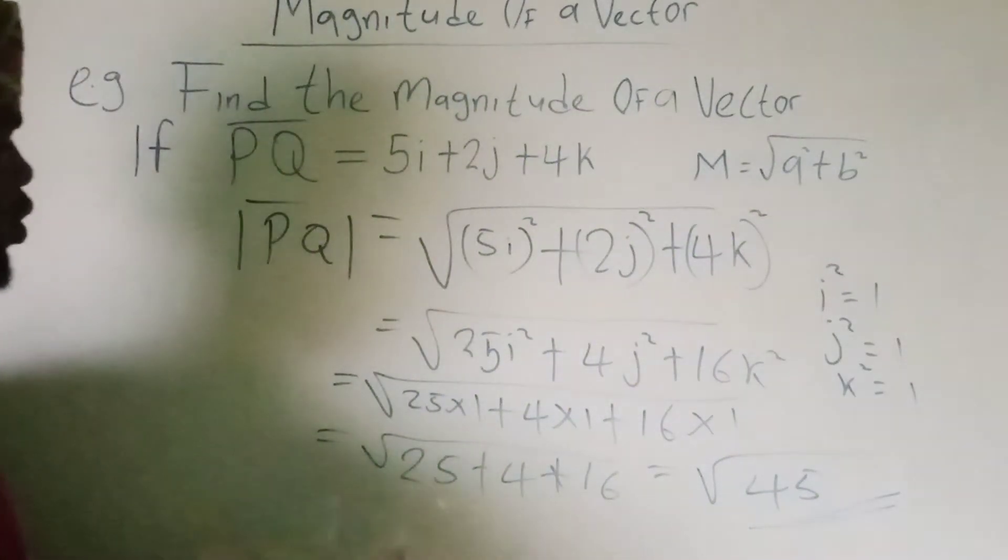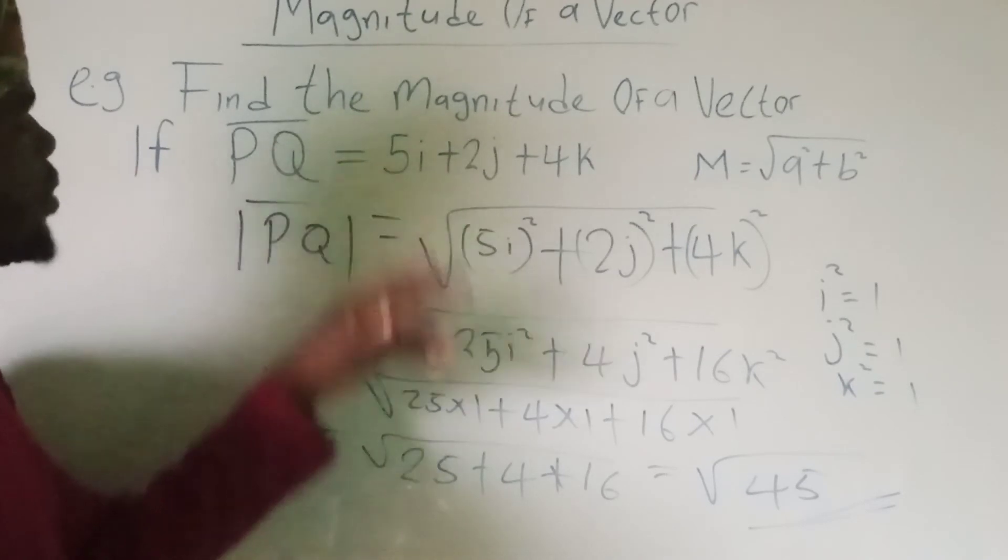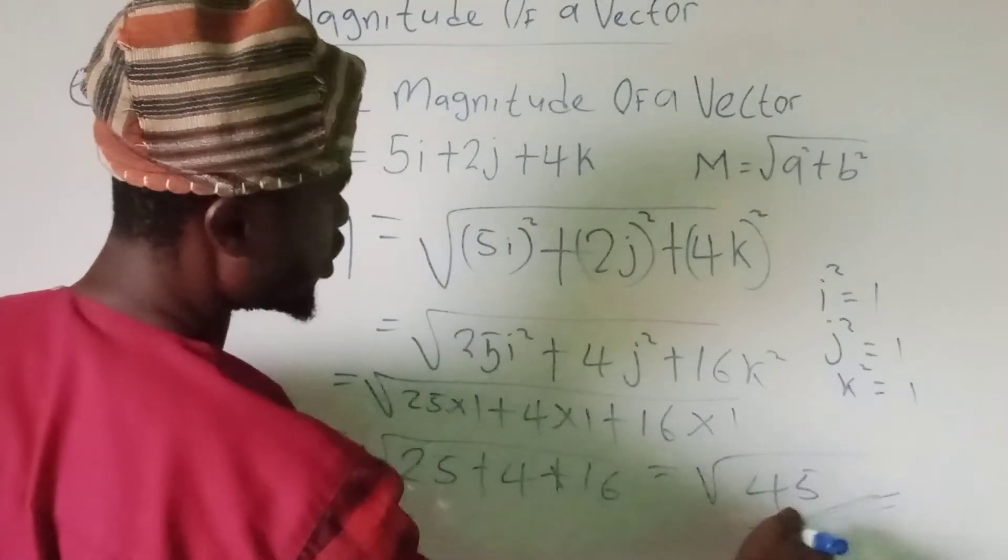So our magnitude for PQ, now equal to square root of 45.